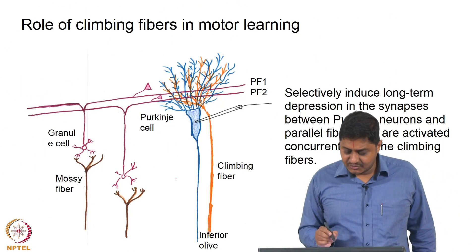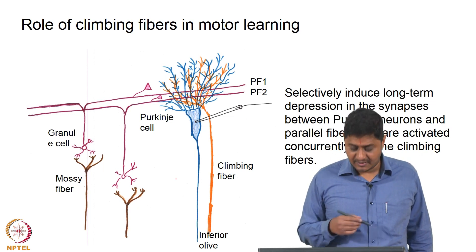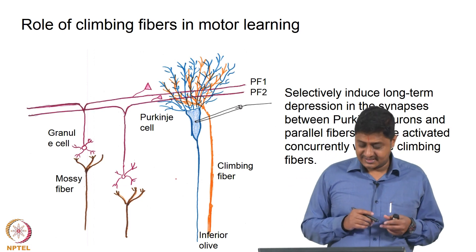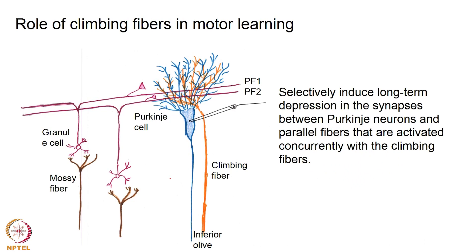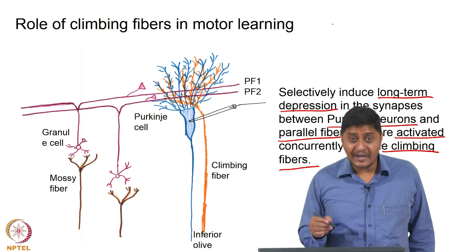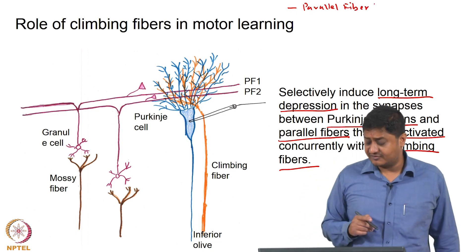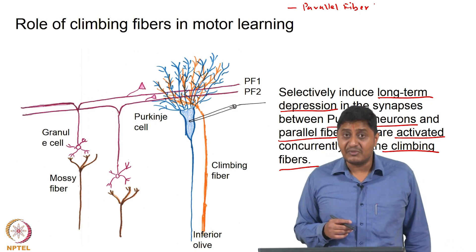In experiments, selective Purkinje cells are stimulated by simultaneous stimulation of multiple parallel fibers and climbing fibers, and activity of Purkinje cells is measured. This selectively induces long-term depression in the synapses between Purkinje neurons and parallel fibers that are activated concurrently with climbing fibers. Red indicates parallel fiber activity or stimulation, and blue indicates climbing fiber stimulation.